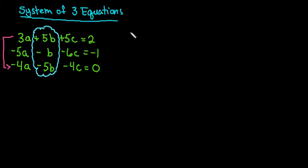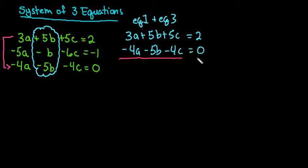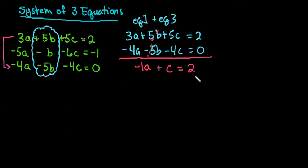So I'm going to take equation one — the 3a plus 5b plus 5c — and add it to equation three, which is negative 4a minus 5b minus 4c equals zero. If I add these two together, I get 3a minus 4a, which is negative 1a. My b terms cancel out. 5 plus 4 gives me 1c, equals 2. I still can't solve this because there are still two variables, so I need to eliminate again.